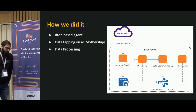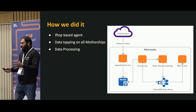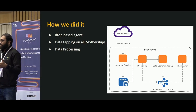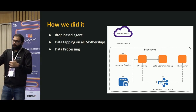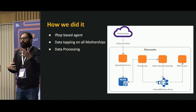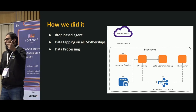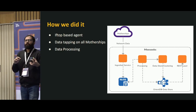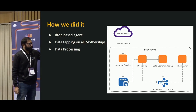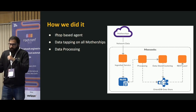We ran an agent on all the motherships across Flipkart. The agent is iftop-based — iftop is a Linux utility. Similar to how the 'top' command shows an ordered process list by resource consumption, iftop orders all network connections on a particular Linux machine by bandwidth usage. We tweaked this utility and ran it as a daemon on all motherships. We timely collect data from it, and that data gets ingested into an ingestion service. The data is nothing but a source socket and a destination socket — source IP and port, destination IP and port.